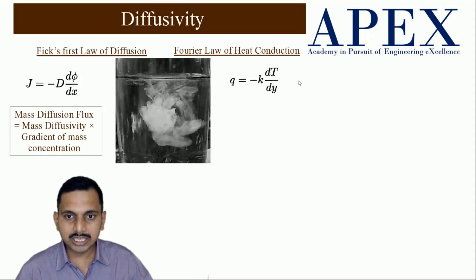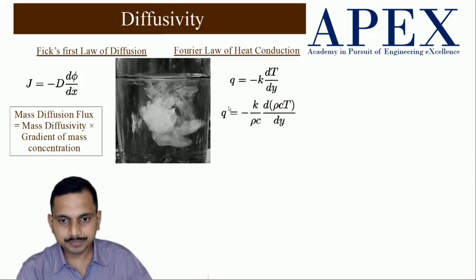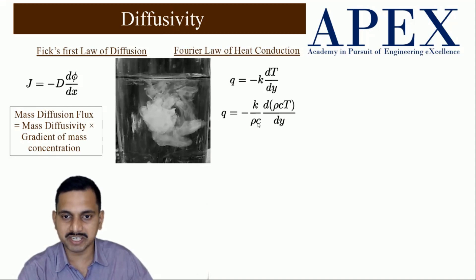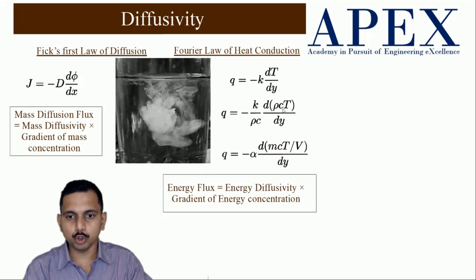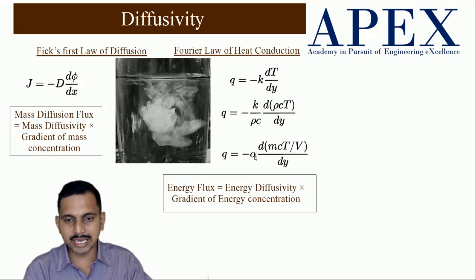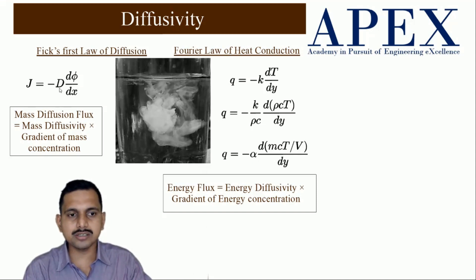To make the analogy work, we divide by heat capacity and multiply by heat capacity. Rho is density and C is specific heat, so rho times C gives the heat capacity of the medium. Rho is mass per volume, so rho times C times T per volume gives energy concentration, and d(mCT/V) by dy gives the gradient of energy concentration. Therefore, energy flux equals energy diffusivity alpha times the gradient of energy concentration. So alpha is analogous to D — mass diffusivity and energy diffusivity are analogous to each other.